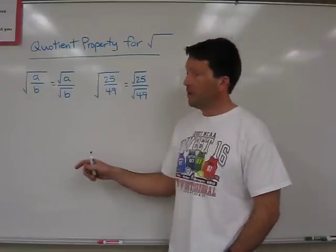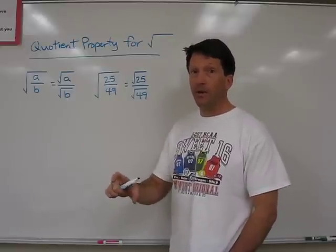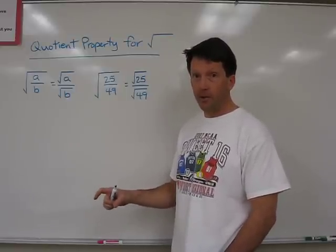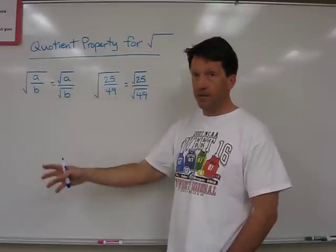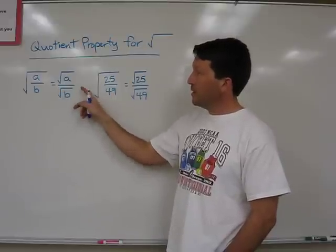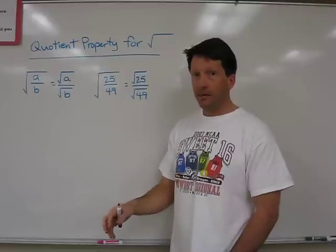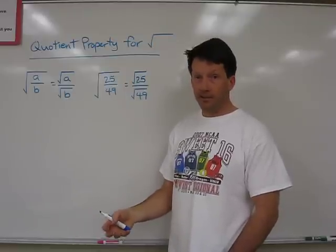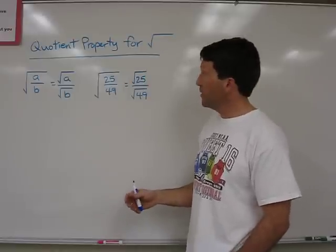The quotient property states that if you have a fraction within one radical sign, say for example a over b, you can separate those into the square root of a divided by the square root of b. Sometimes it's easier to do that for simplifying the problem depending on what the numbers are.